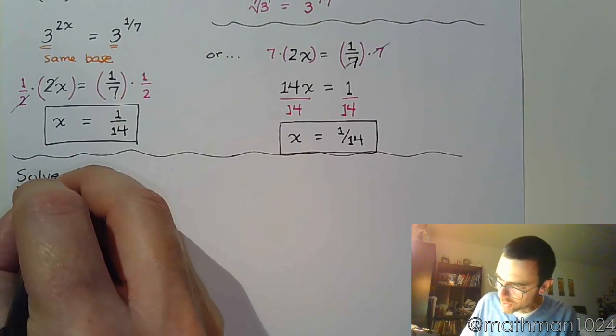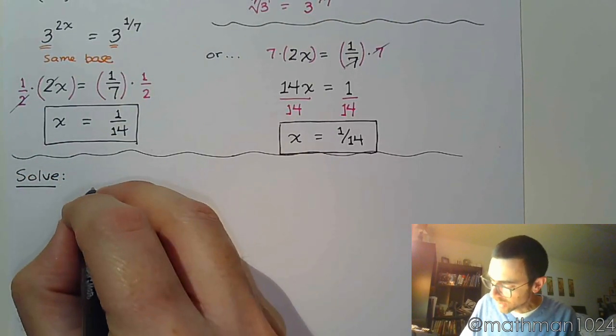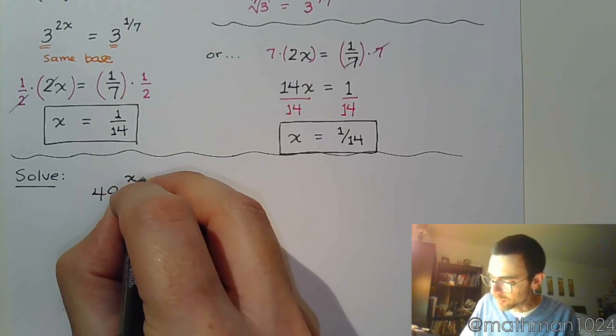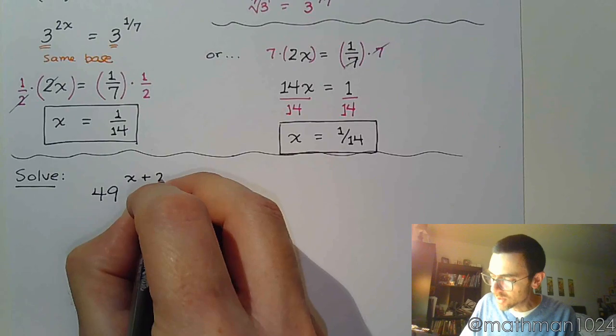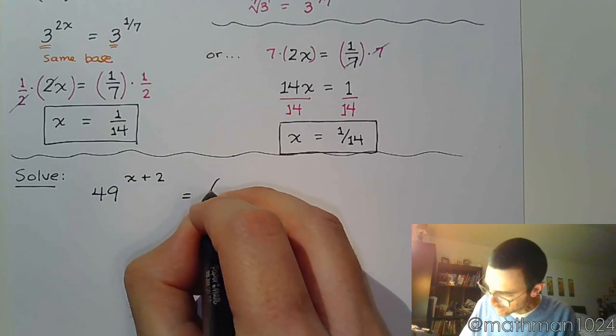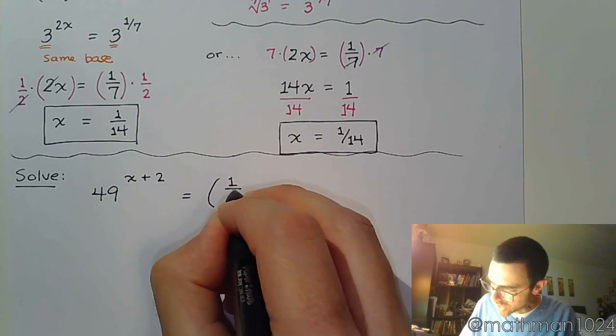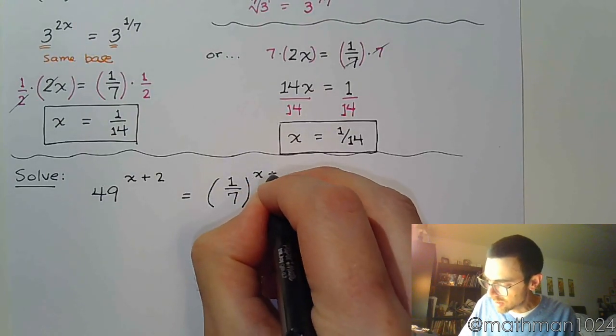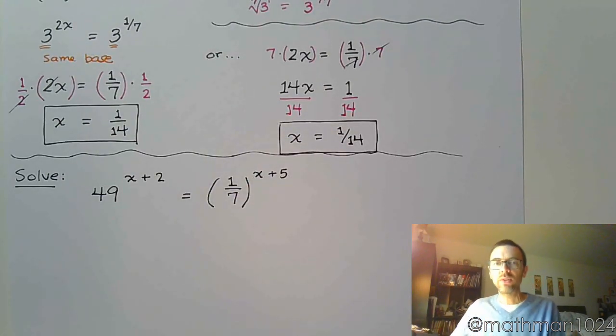So we just did a problem that contained radicals. Let's see what happens when fractions are there from the very beginning. So 49 raised to the x plus 2 is equal to the fraction 1/7 raised to the x plus 5.